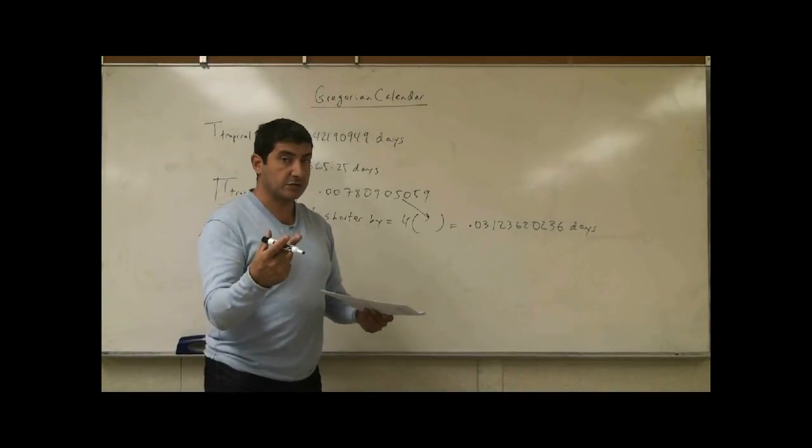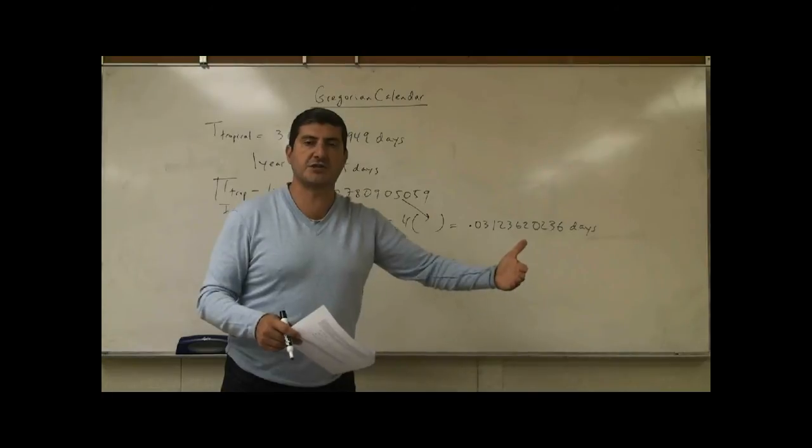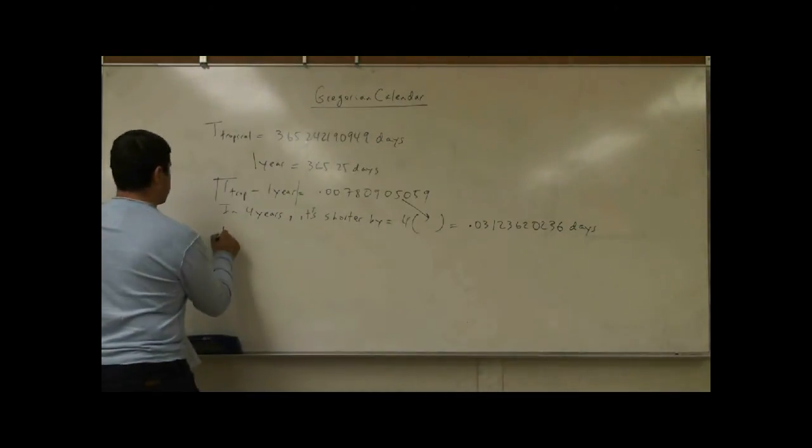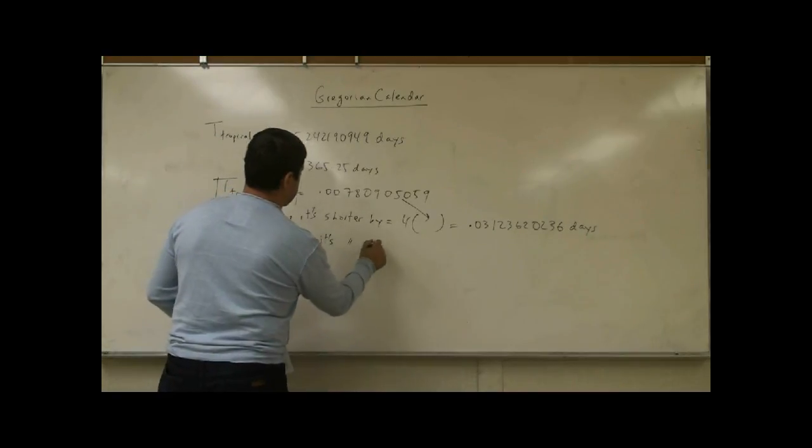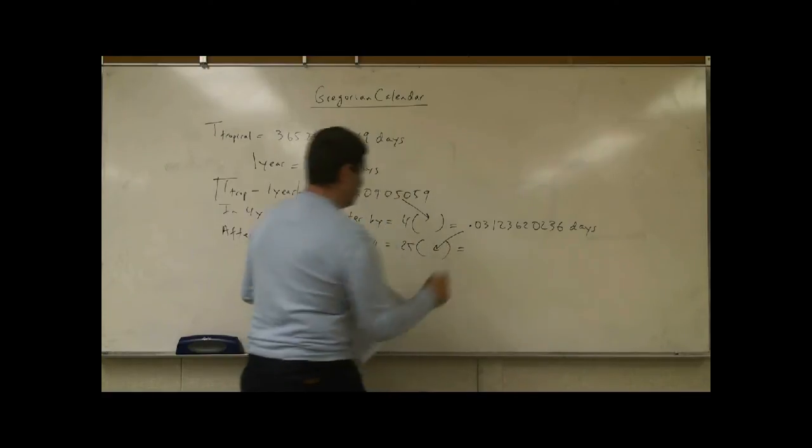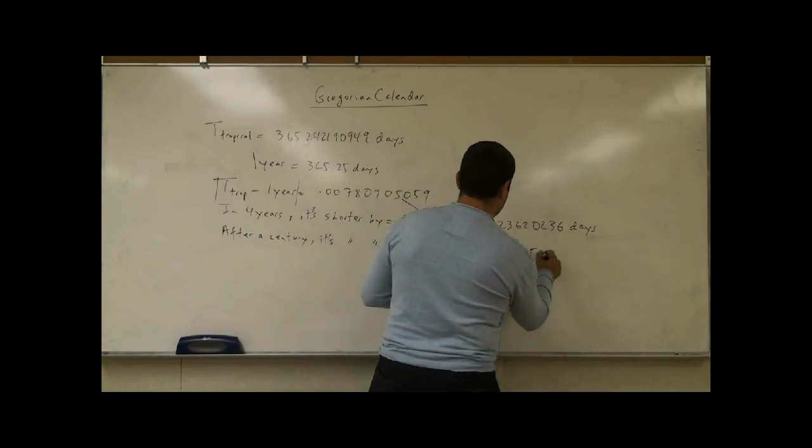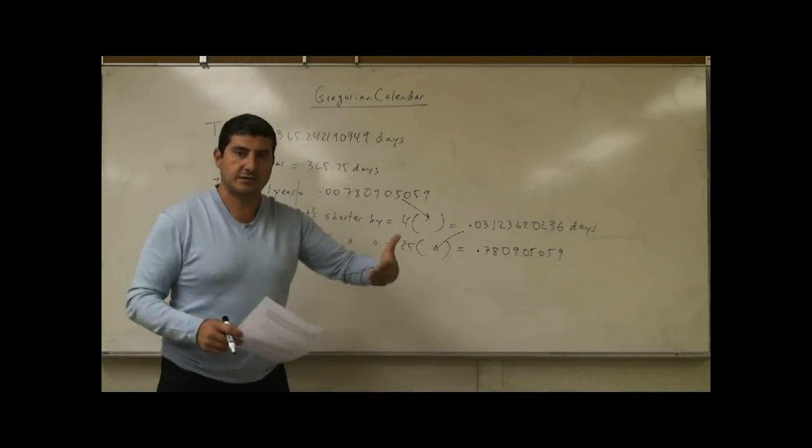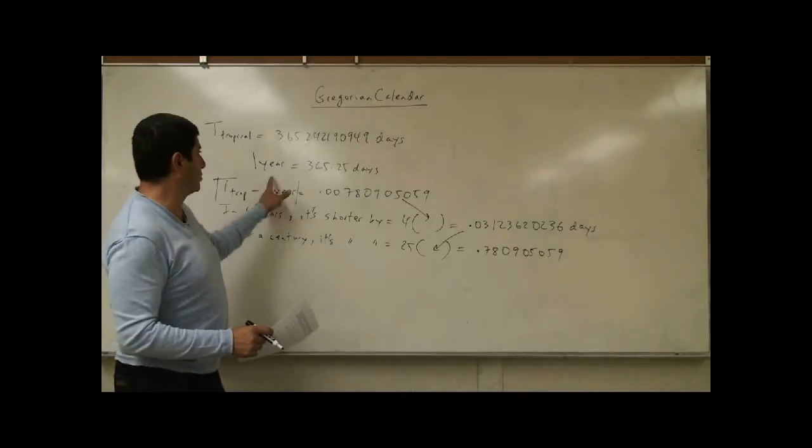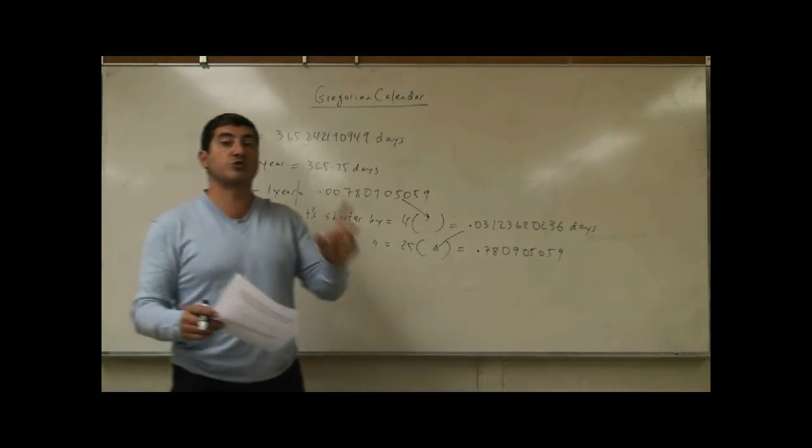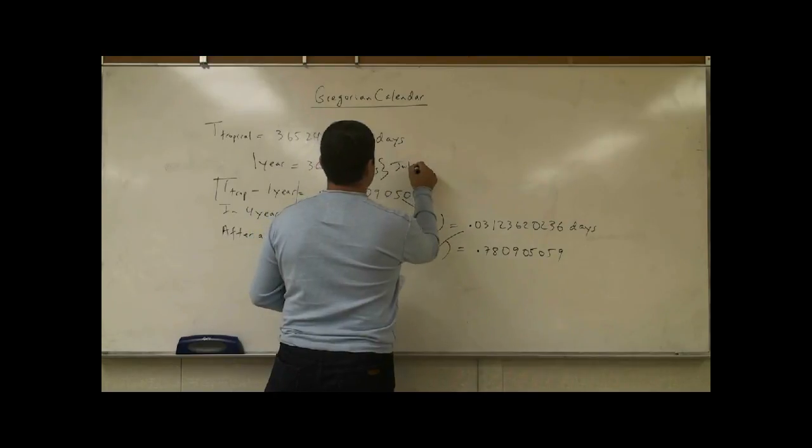But after a century, what will happen? After a century, every four years it's shorter by that much. How many four-year intervals are there in a century? 25 four-year intervals. So after a century, it's shorter by 25 times this number, and now it starts adding up. You get 0.780905059. That means you've over-added, every 100 years, you've over-added 0.78 days to the calendar if you just go purely by the 365 and a quarter days, which was the Julian calendar. The Julian calendar relied just by doing this, and it didn't worry about any corrections.